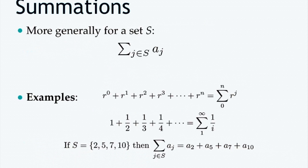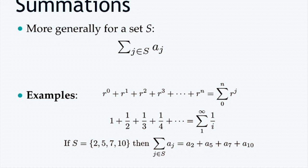Consider the sum r⁰ + r¹ + ... + rⁿ, which can be written as sigma from j=0 to n of r^j. You can substitute values to find the sum between two numbers, say 0 and 100, or 0 and 10. Another summation is from 1 to infinity of 1/i, giving terms 1, 1/2, 1/3, all the way to infinity.